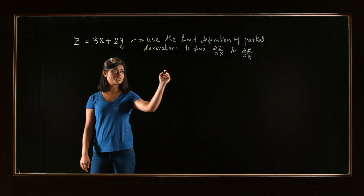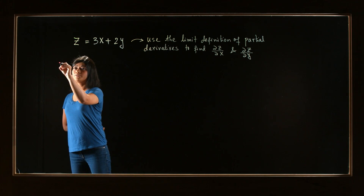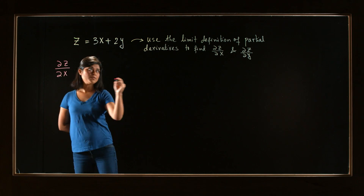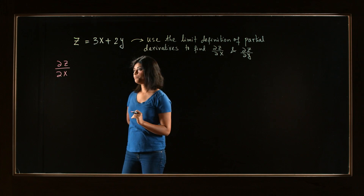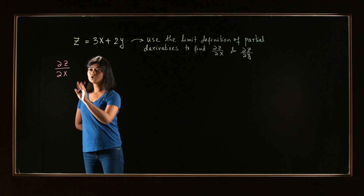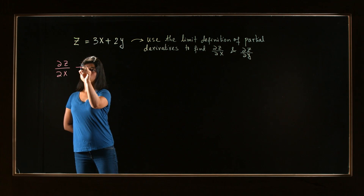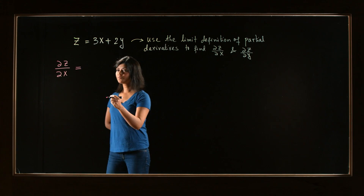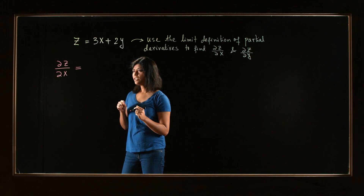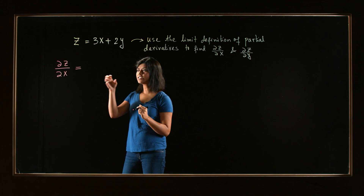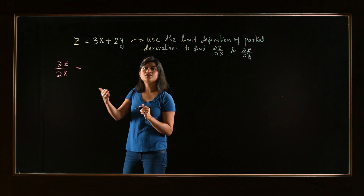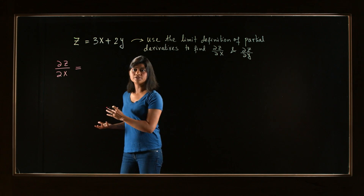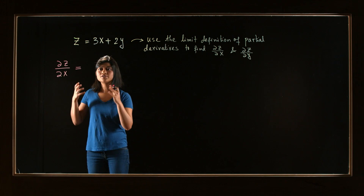The first partial derivatives are the derivative of z with respect to x, and then the partial with respect to y. Let's talk about the first one with respect to x. Notice that this is almost similar — I don't even want to call it a generalization of the limit definition of our usual derivative definition.